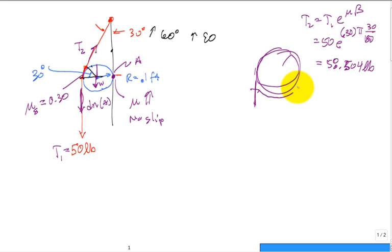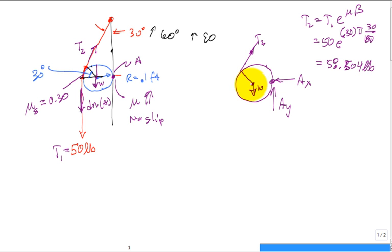I'm gonna cut the cable right there, come in and cut right between the wall and that. So I end up with my cylinder. I end up with A in the x, I end up with A in the y, that's at contact. I end up with the weight in the center. I end up with T2 coming up at an angle of 30 degrees up from the horizontal.